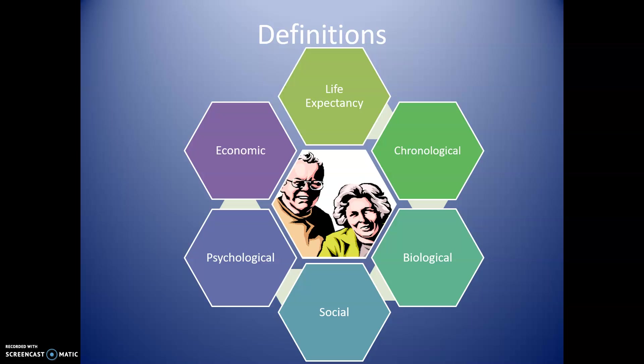Less commonly in health do we look at the psychosocial and economic factors that influence our impression of age and old age. But these do play a part when we think about the social and sociological implications of aging. For example, what is considered an older person in populations with low life expectancy, such as in areas of Africa or Southeast Asia, may differ because of their role and place in society, which also defines what we think of as an older person.